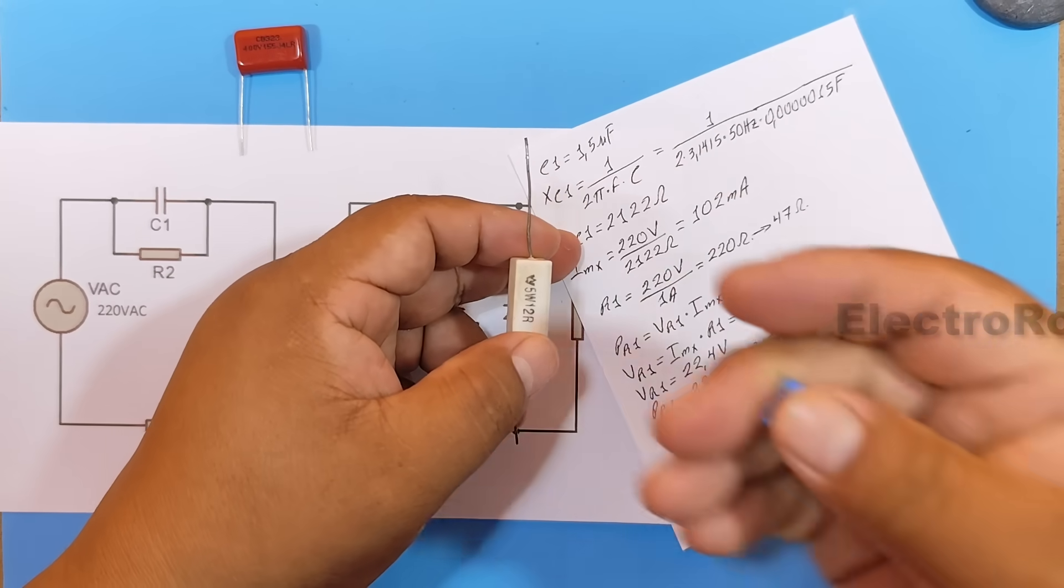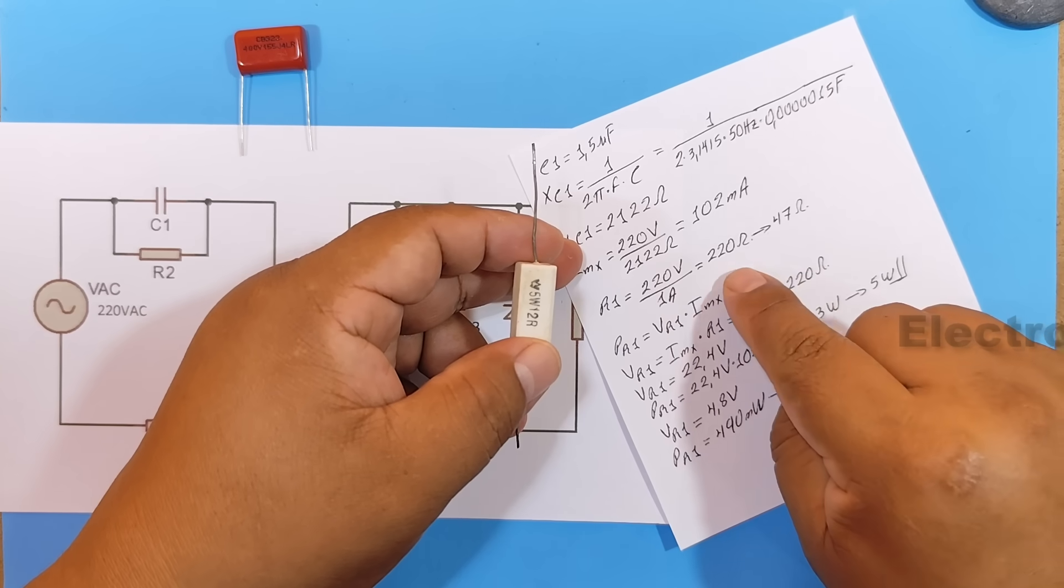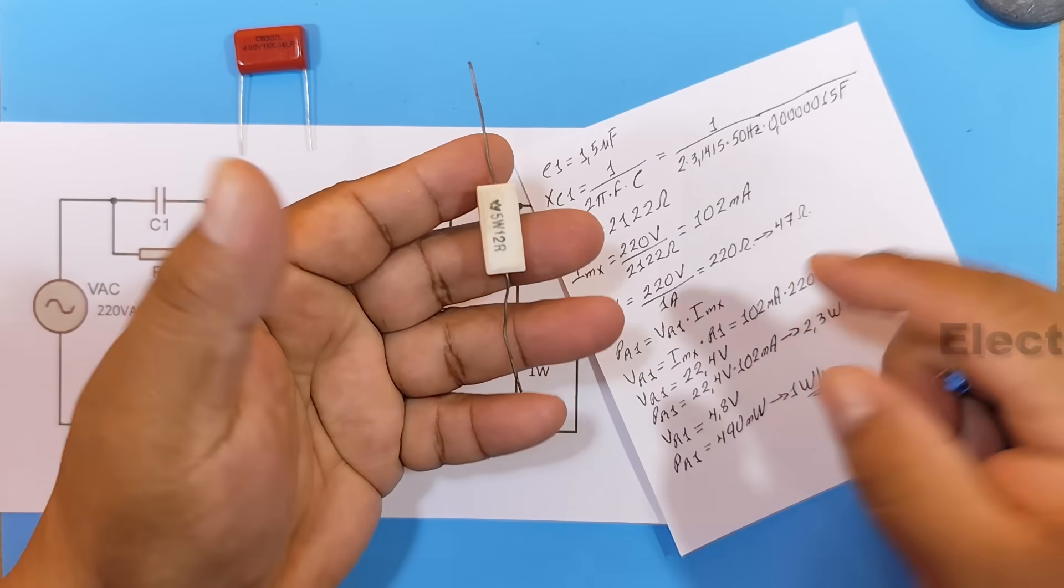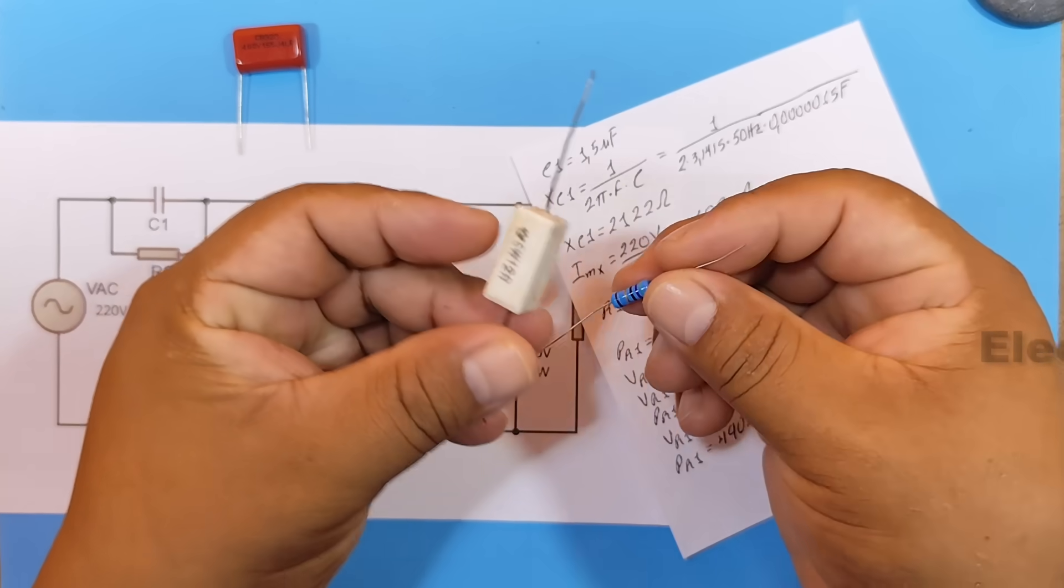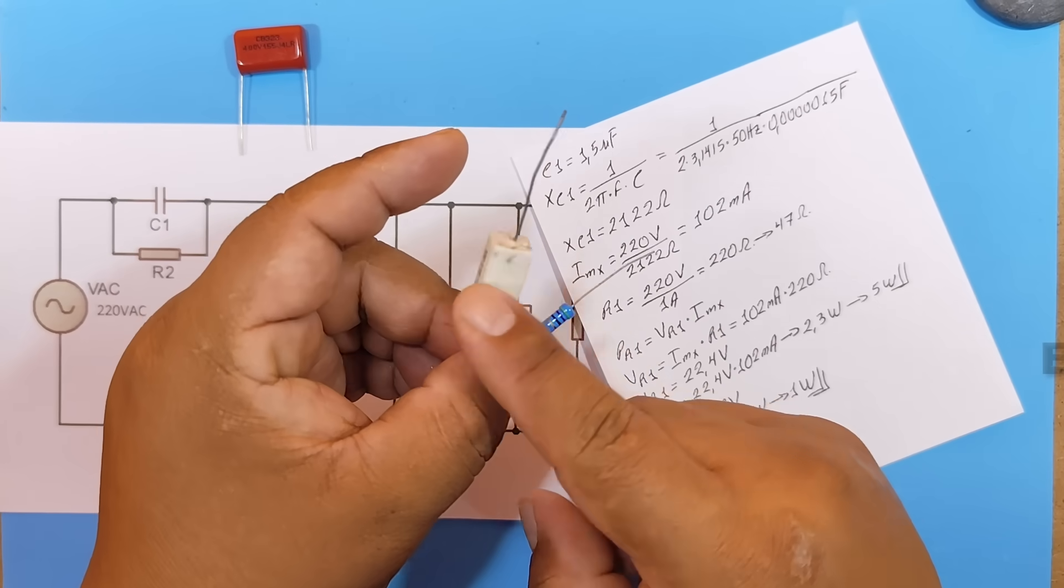That would be the difference. If we use 47 ohms, we'll use 1 watt. If we use 220 ohms, we'll use 5 watts. Therefore, it's better to use a 1 watt resistor than a 5 watt resistor.